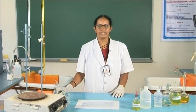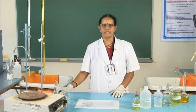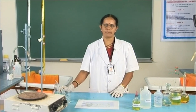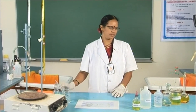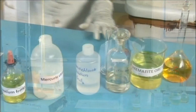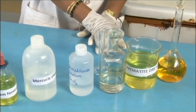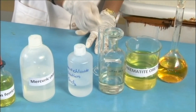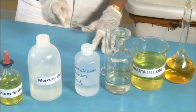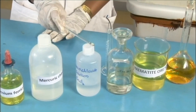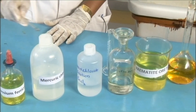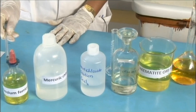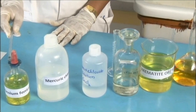Now let us see how the experiment is conducted. The reagents required for the experiment are standard potassium dichromate solution, the ore solution, concentrated HCl, stannous chloride, mercury chloride, and freshly prepared potassium ferric cyanide indicator.